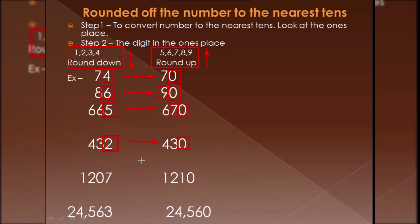Next is 1207. Look at the tens place — it is 0 — and the one's place is 7, which is greater than 5. Greater than 5 means we add one to the tens place: 0 plus 1 becomes 1, and the one's place becomes zero. The thousands and hundreds places remain as they are.